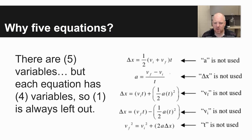So why are there five equations for kinematics? The key thing is there are five different variables: acceleration, displacement, velocity final, velocity initial, and time. But each of those equations, if you take a look at them, they only have four different variables. So one variable is always left out.